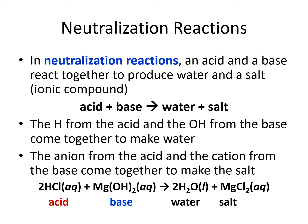For our salt, we're going to use the crisscross rule to predict its formula. We've got the magnesium ion coming from the base — that's Mg²⁺ — and we've got the chloride ion coming from the acid — that's Cl⁻. When we crisscross, the 2 from the magnesium goes down next to the chlorine, and the 1 from the chlorine goes down next to the magnesium, so we get MgCl₂.